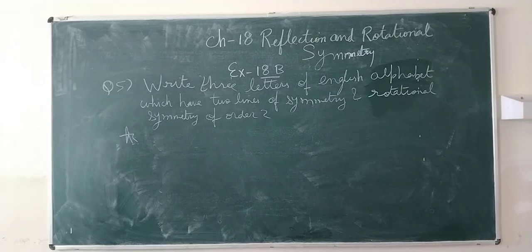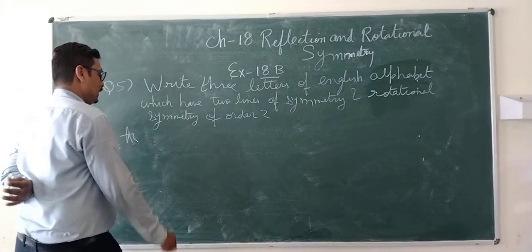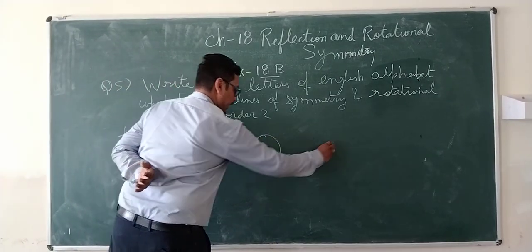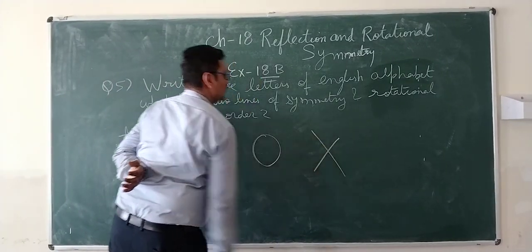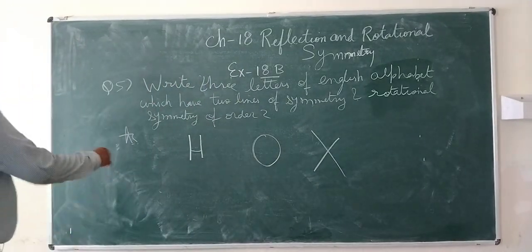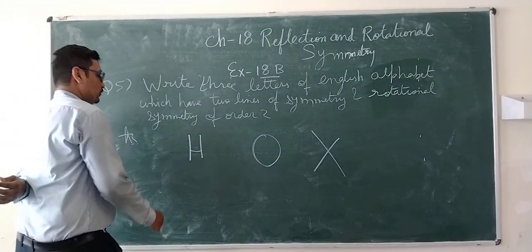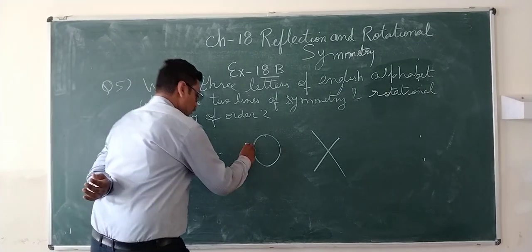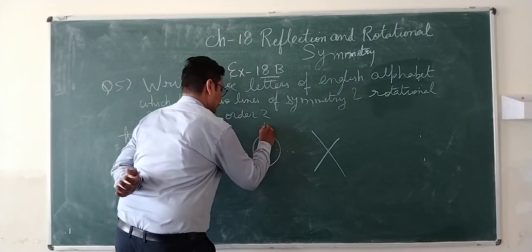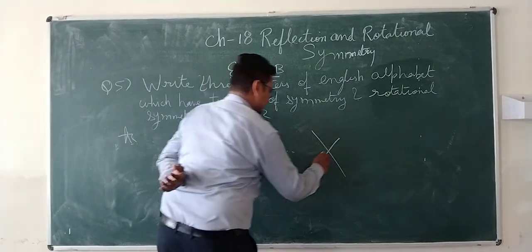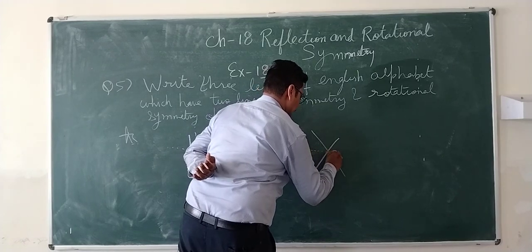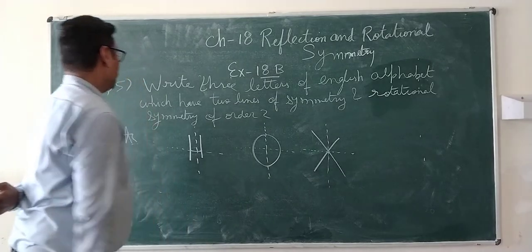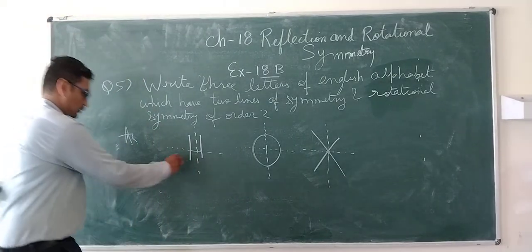The three English letters are H, O, and X. We can see H is having two lines of symmetry, this one and this one. O is also having two lines of symmetry, this one and this one. Similarly X having two lines of symmetry, this and this. Also their order of rotation symmetry is 2.